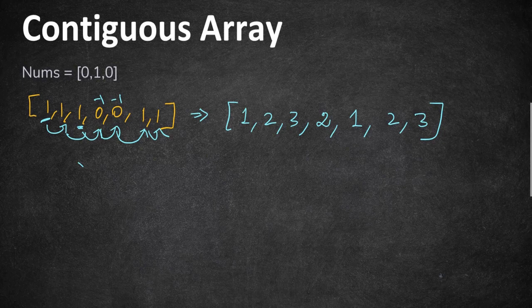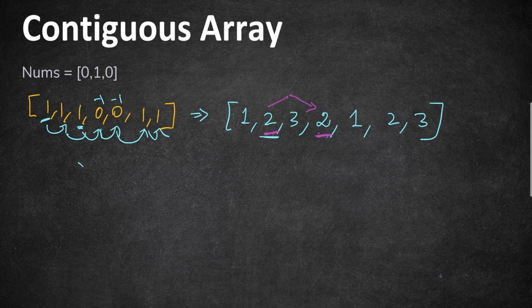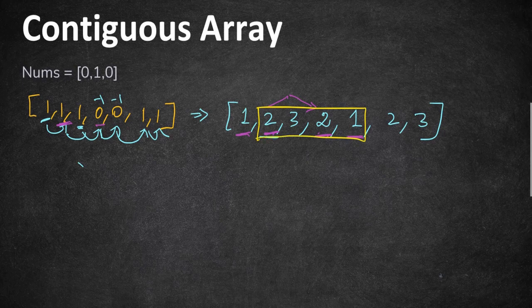Instead of looking for zero, we look for equal prefix sum values. If the prefix sum at two different positions is the same, it means the subarray between those two positions has equal numbers of zeros and ones — the values in between neutralized each other. For example, if the sum is 2 at one point and returns to 2 later, the subarray in between is balanced. So from the index of one occurrence of a sum value to the next, there exists a subarray with equal zeros and ones.